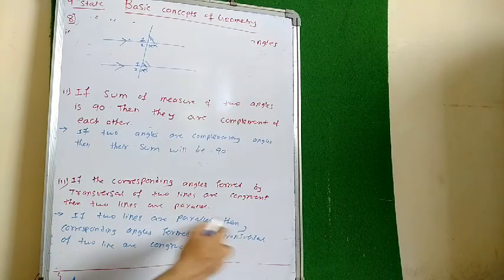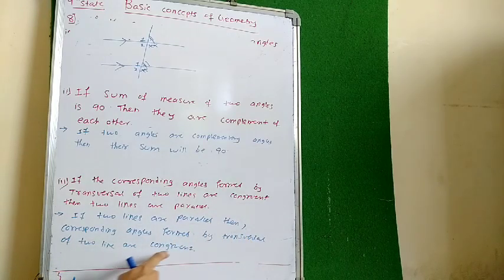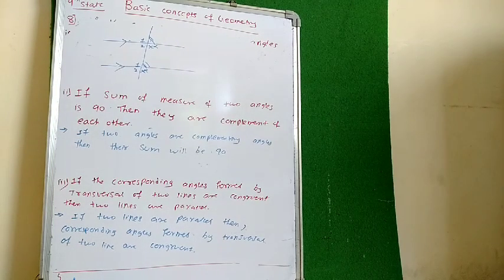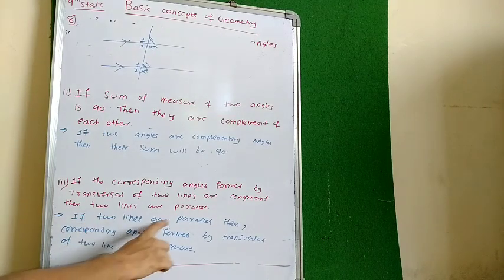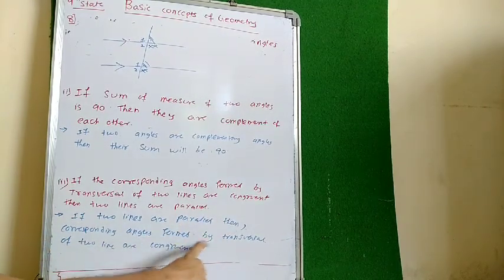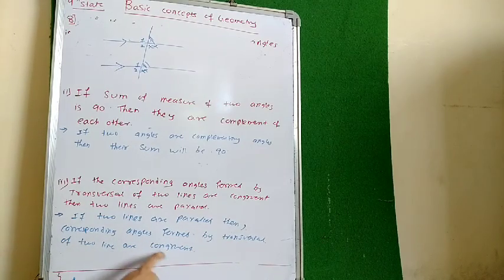If the two lines are parallel, then the corresponding angles formed by the transversal of two lines are congruent. I will read it again: if two lines are parallel, then corresponding angles formed by the transversal of two lines are congruent.